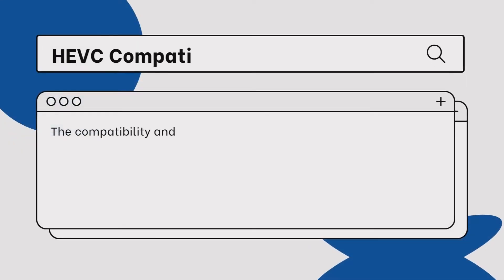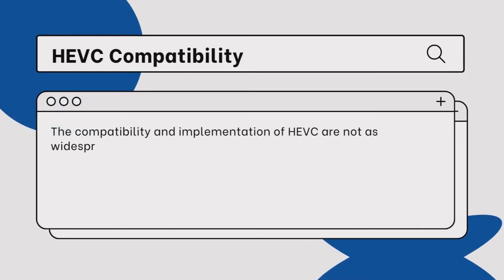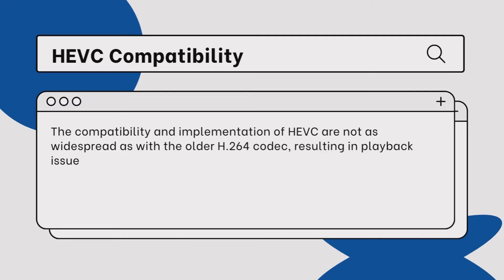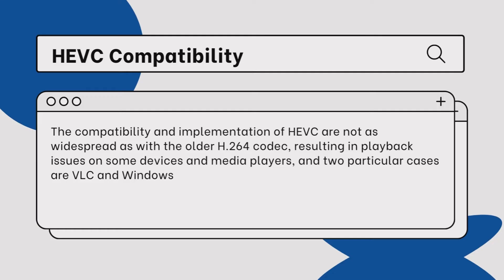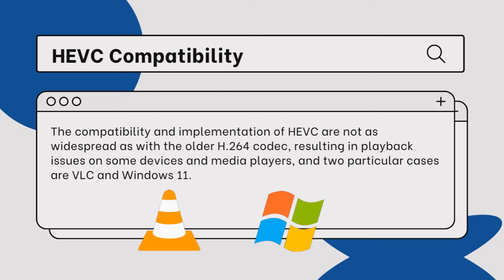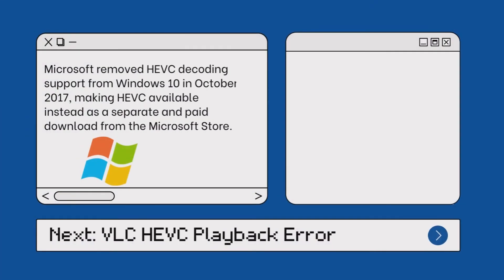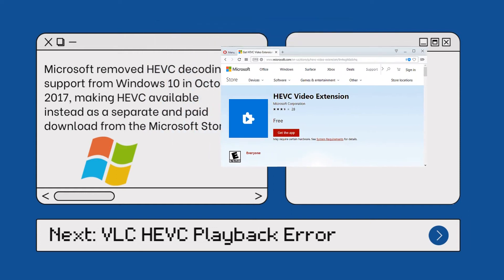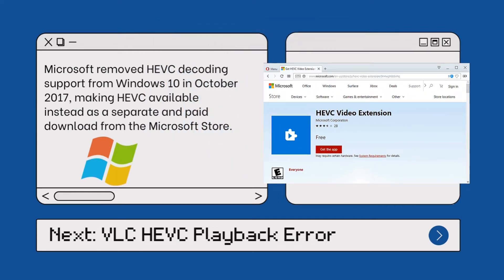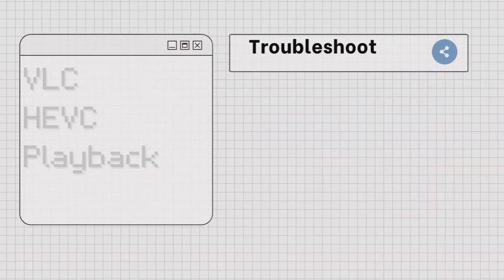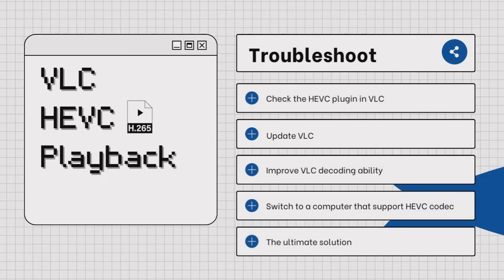However, the compatibility and implementation of HEVC are not as widespread as with the older H.264 codec, which results in playback issues on some devices and media players. Two particular cases are VLC and Windows — Microsoft removed HEVC decoding support from Windows 10 in October 2017, making HEVC available instead as a separate paid download from the Microsoft Store.